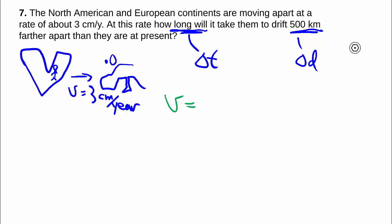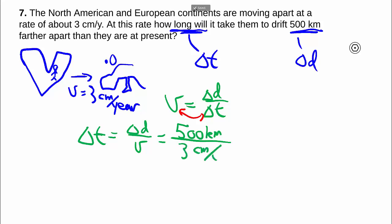So we have speed is change in distance over change in time. Rearranging to solve for change in time first, doing a little cross multiplying, we can get that we have 500 kilometers divided by 3 cm per year.